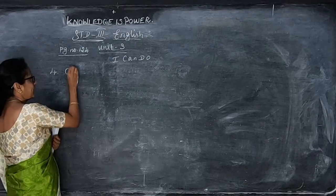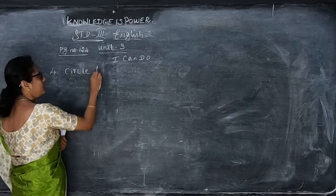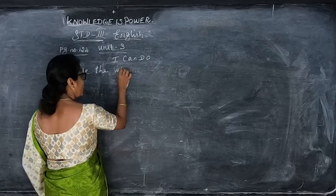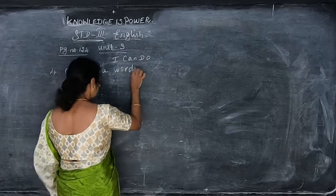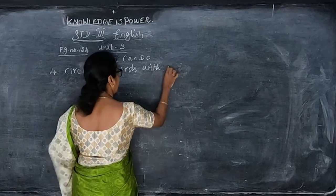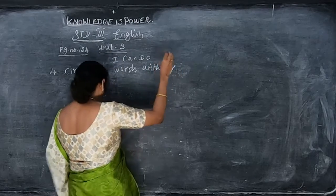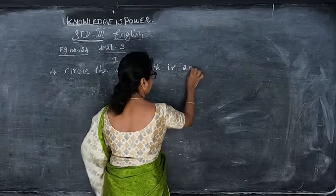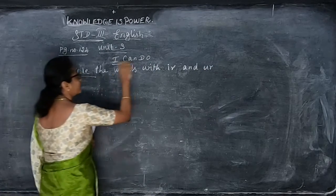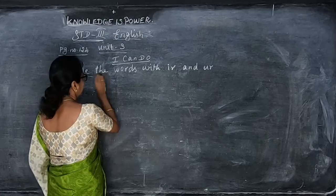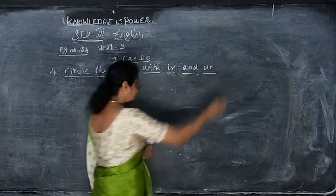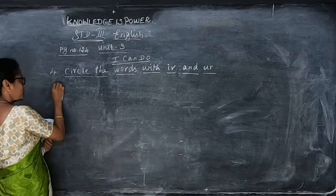Circle the words with I-R and U-R. Whichever words come with I-R and U-R, you have to circle them. We have already seen this in previous classes. So circle the words with I-R and U-R. Let's look at the words given. First set A: A-R-T (art), P-A-R-T (part), G-I-R-L (girl).